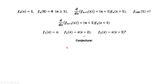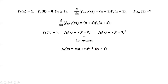This is our conjecture. If here is n, here should be n, and here is n minus 1. This means fn of x equals x times (x+n) to the power (n minus 1), for n bigger than or equal to 1.